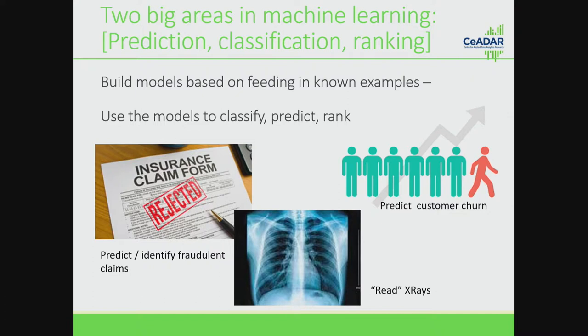Some practical examples in supervised machine learning: in the insurance claims sector, we're about to start a project to help a company identify fraudulent claims. We'll go back through the data to see which ones were fraudulent and which weren't, building algorithms to decipher what patterns lead to one versus the other — so when another claim comes in, the algorithm can say what percentage likelihood it's fraudulent. Machine learning is also used heavily in the medical domain — with X-rays, feeding in examples of problematic versus healthy X-rays to build a model. The same applies to customer churn — in each company there are things you want to classify, predict, or rank.